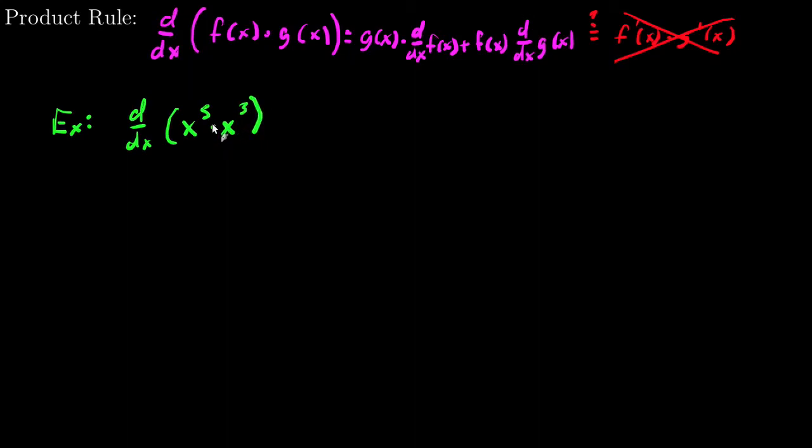So I want to evaluate the derivative with respect to x of x^5 times x^3. Now, a lot of the problems we're going to see, I wouldn't recommend actually doing product rule. I would recommend doing this using the algebra to combine these powers, so product of a power, and take the derivative with respect to x of x^8, which will be 8x^7.